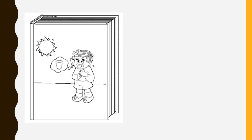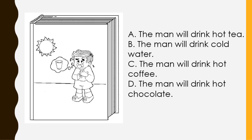Now, here is the third illustration. As you can see, it is a sunny day. The boy is thirsty. So, what will happen next? A. The man will drink hot tea. B. The man will drink cold water. C. The man will drink hot coffee. D. The man will drink hot chocolate.